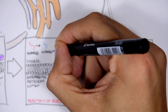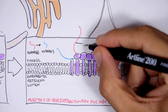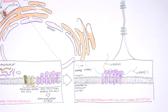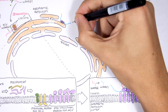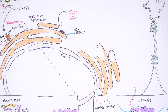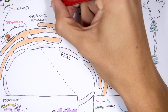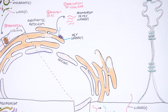This negative single-stranded RNA will then be used as a template by the replication complex to form many positive single-stranded RNAs. So from this negative single-stranded RNA, the replication complex will produce many positive single-stranded RNAs. Looking at the big picture, the replication complex forms, uses the negative single-stranded RNA to produce many positive single-stranded RNAs, and then replicates the viral RNA.